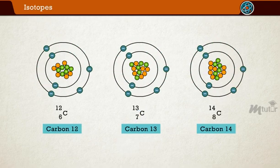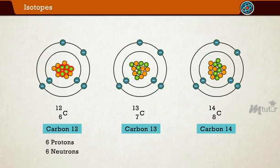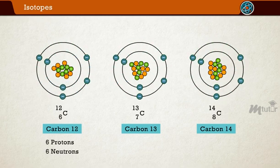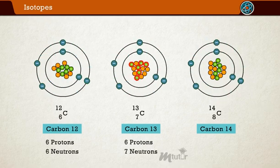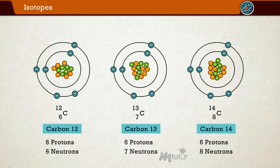Carbon occurs naturally in three forms: carbon-12, which has six neutrons plus six protons equals 12; carbon-13, which has seven neutrons; and carbon-14, which has eight neutrons.